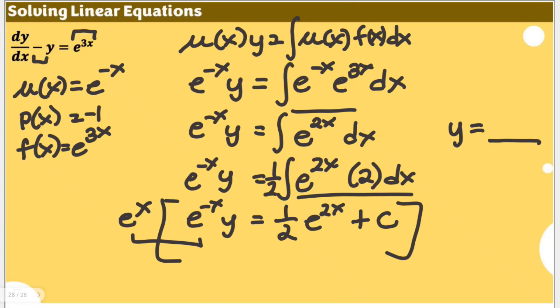Because e to the power of x times e to the power of negative x, because of the laws of exponents, that's equal to e to the power of 0 times y. But also doing it on the other side. It's just like that.